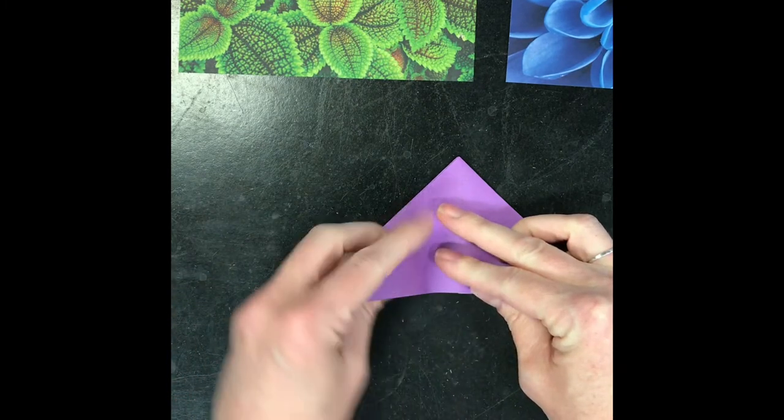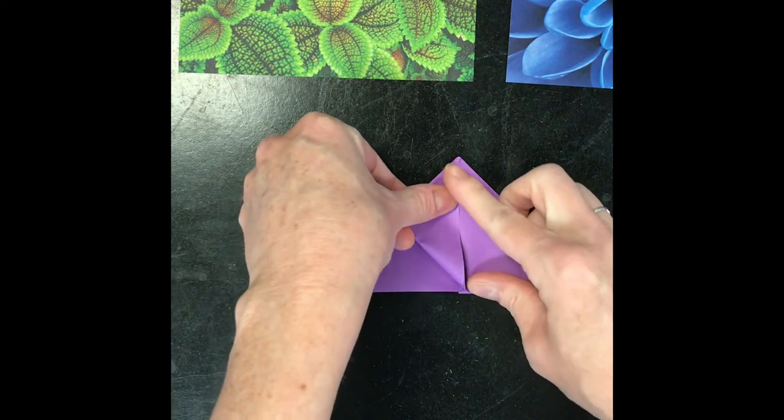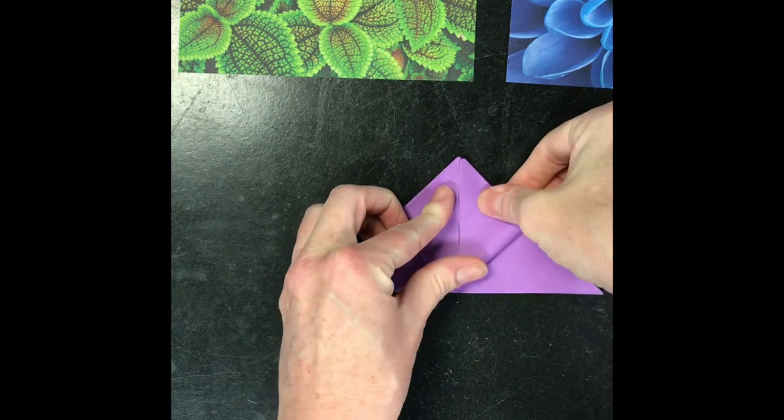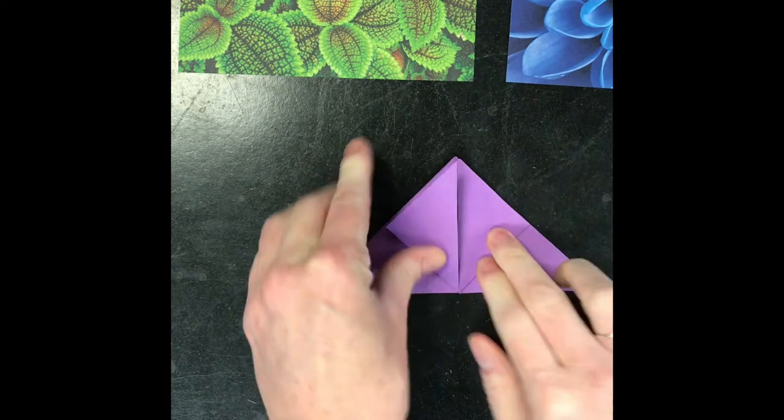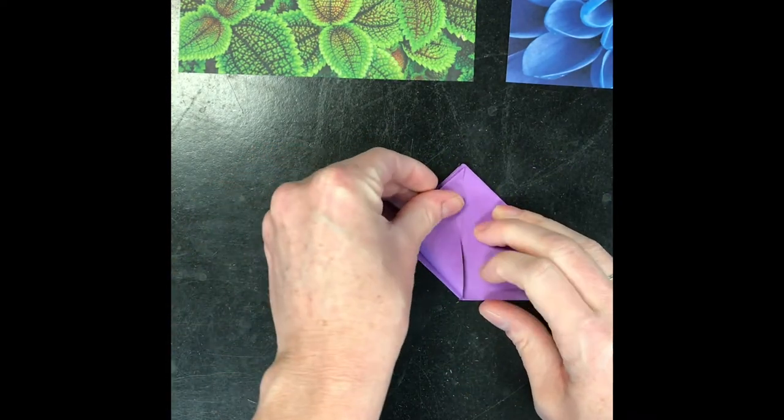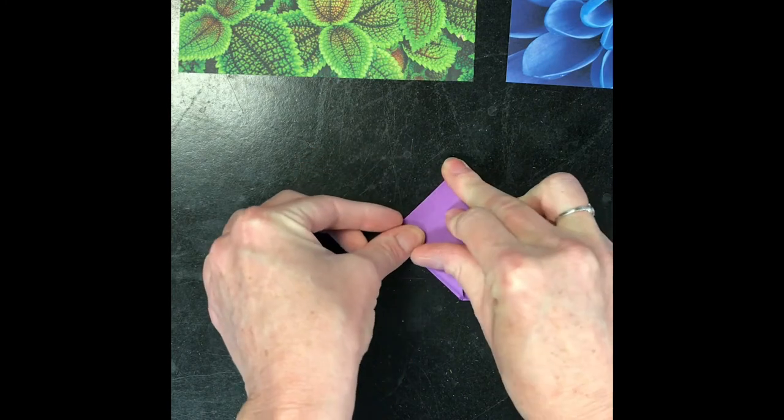So I'm going to take that outside corner, and I'm going to fold it up to the top of my triangle, and I'm going to do the same thing on the other side. That's going to leave us with kind of a diamond in the middle. I'm going to turn it over and do the same thing with the outside corners on the back side.